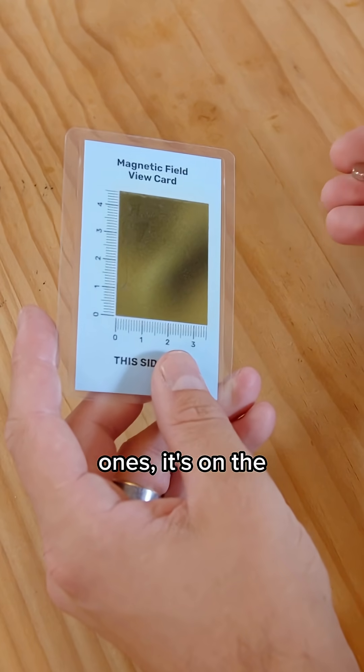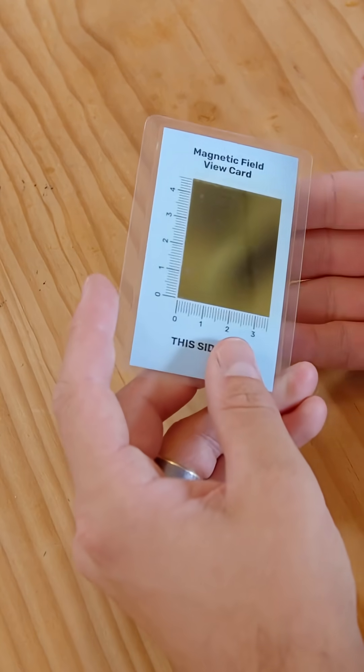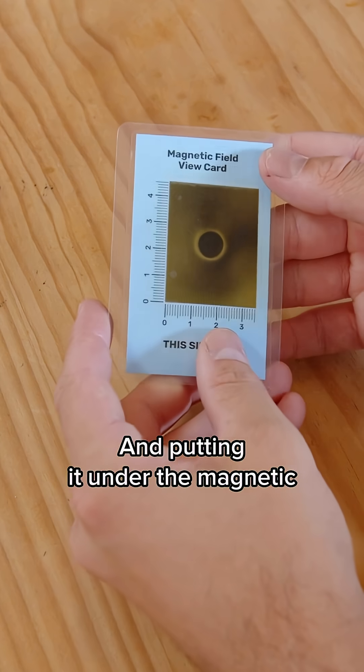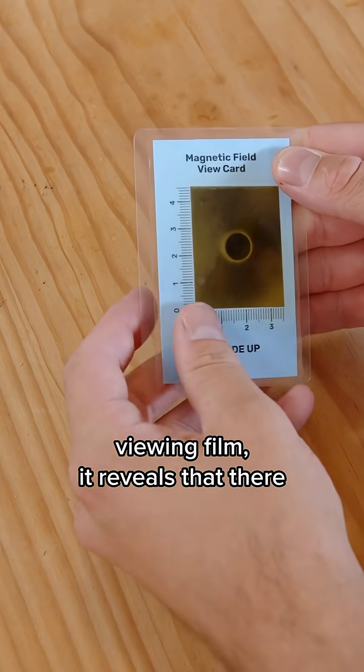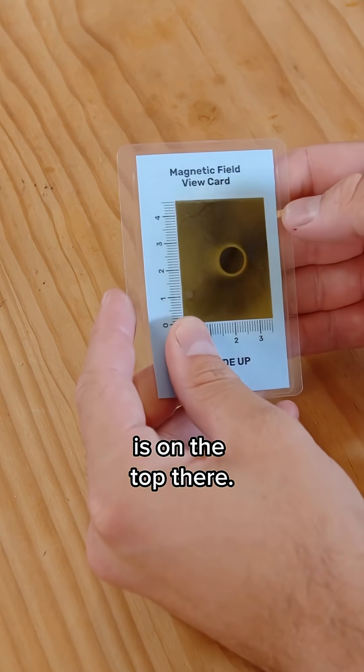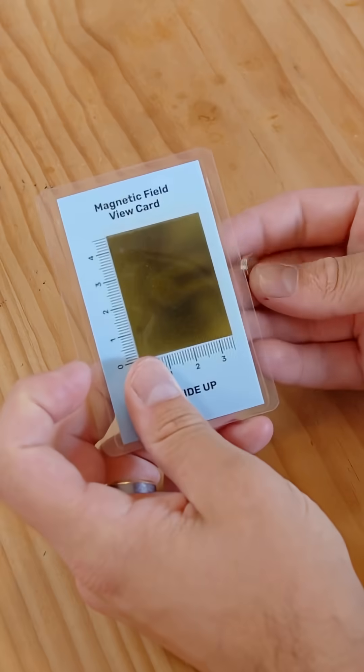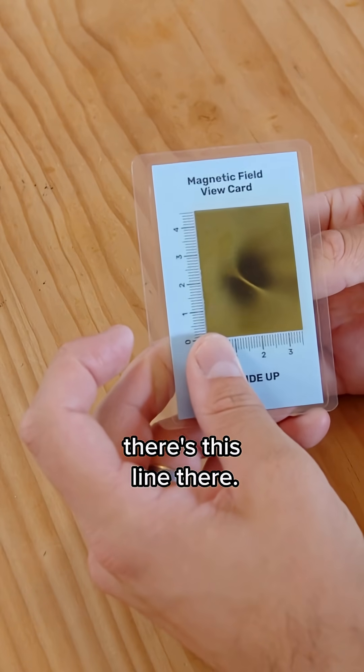Typically with these flat disc ones it's on the bigger flat side and putting it under the magnetic viewing film it reveals that there is one of the poles is on the top there and flip it on the side you'll see there's this line there.